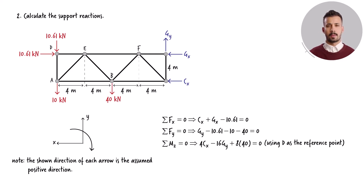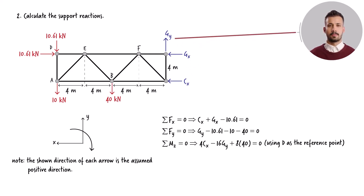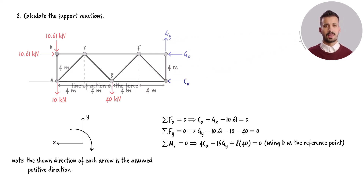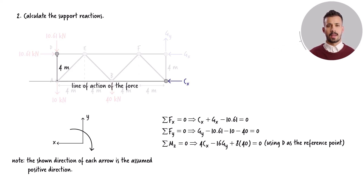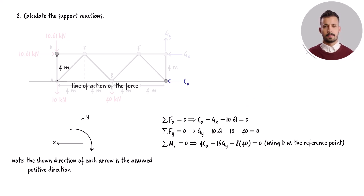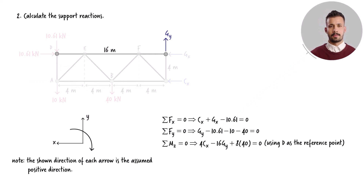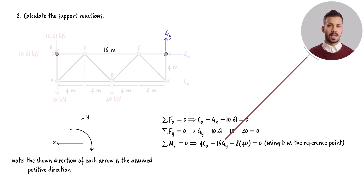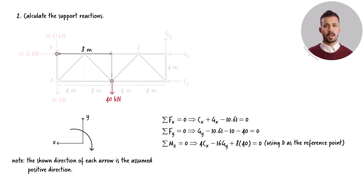Three forces create a moment at point D: CX, GY, and the 40 kN load. The moment arm for CX is 4 meters. Since CX causes a clockwise moment at D, we have positive 4 times CX. GY has a moment arm of 16 meters; this force creates a counterclockwise moment at D, so we get negative 16 times GY. With a moment arm of 8 meters, the applied load of 40 kN results in a clockwise moment at point D, so we write positive 8 times 40.